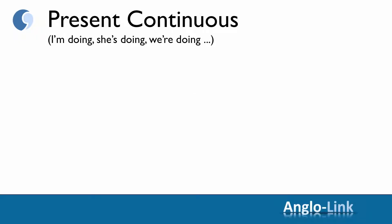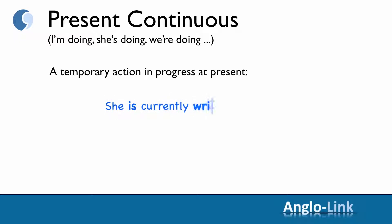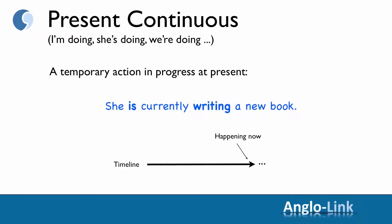Let's now look at present continuous — I'm doing, she's doing, we're doing, etc. As you will remember, the present continuous talks about a temporary action in progress at present. For example: she is currently writing a new book. The action is happening now.